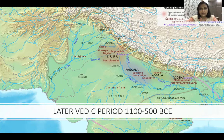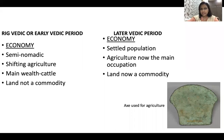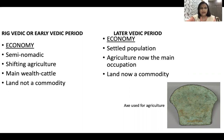Now let us see the differences between the Rig Vedic or early Vedic period and the later Vedic period. I will start with economy, because everything else was based on it. In the Rig Vedic period, the various tribes were semi-nomadic, which means they were not settled at one place — they were moving from place to place. They dabbled in shifting agriculture, meaning they were doing agriculture but using probably the slash-and-burn technology since they were not staying at one place.